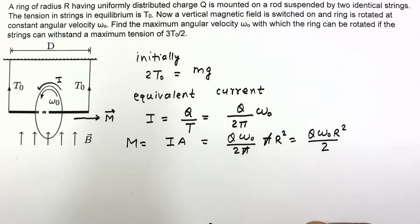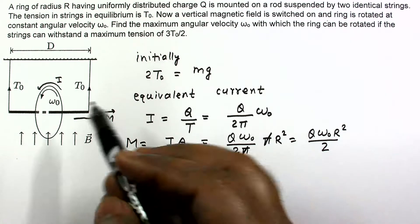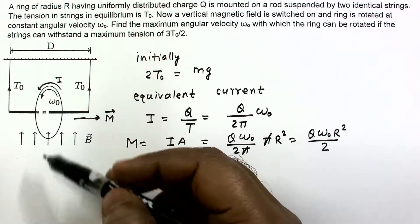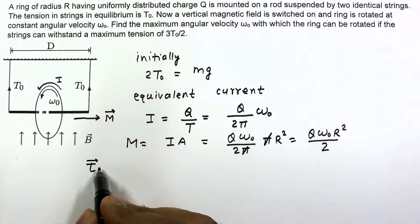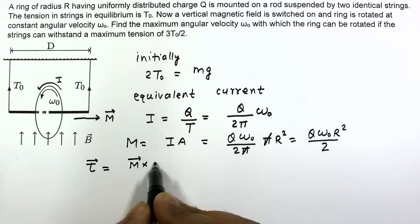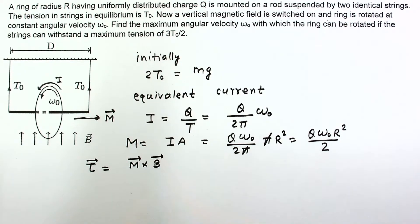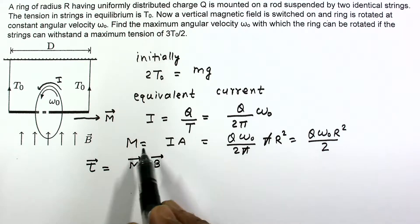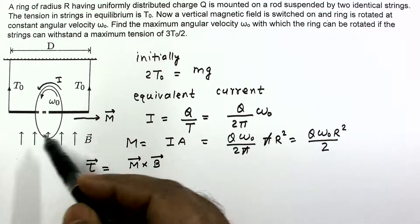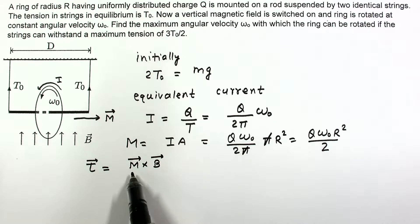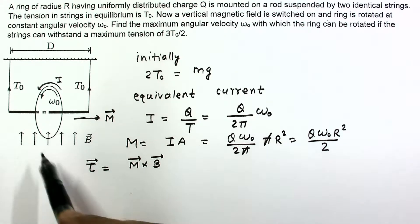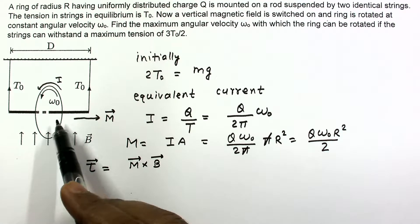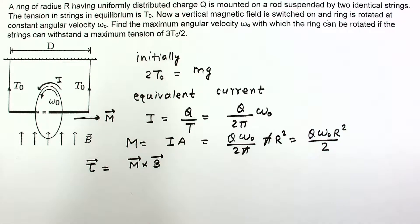We know that due to the magnetic moment in a magnetic field there is a torque on this current-carrying loop, and torque is given by M cross B. This torque is generated by force couples on the ring, since in a uniform magnetic field the net force on a loop is always zero. So the net magnetic force is zero, meaning the effect is due to force couples.